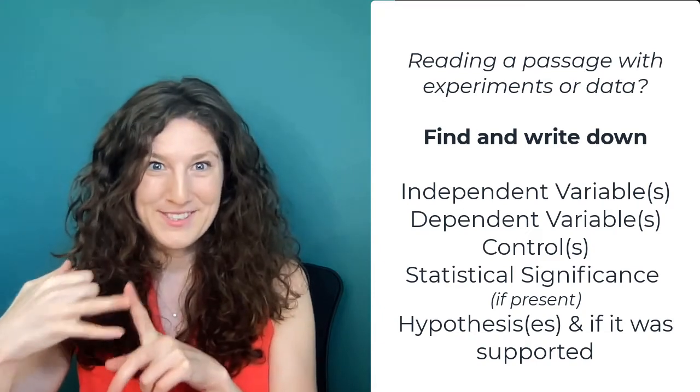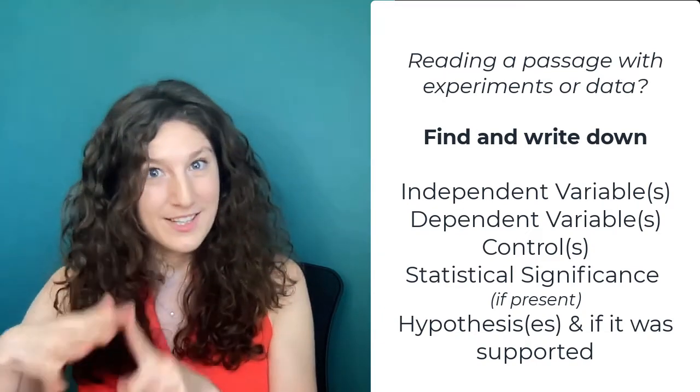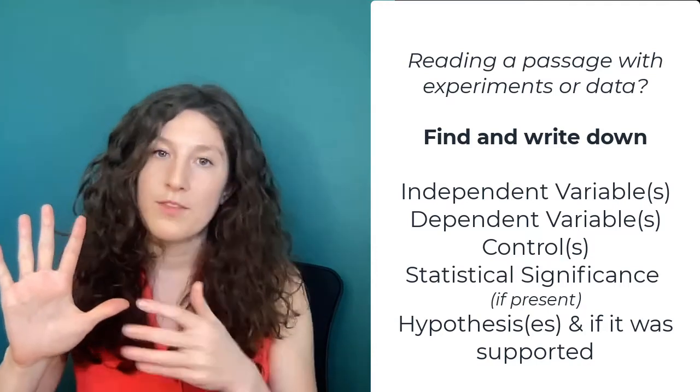Think of these questions as the CARs of the science sections. For the most part, as long as you have a basic comprehension of how to read graphs and figures and how to identify variables, you'll be able to use that knowledge to get what you need on test day. The rest of the information should be right there in front of you if you're able to interpret it. Whenever a paragraph or passage includes an experiment, study, or figure, you want to identify and write down these five things: your independent variables, your dependent variables, your controls, your statistical significance, and your hypothesis and whether or not it was supported.